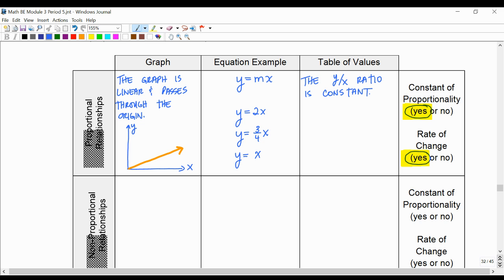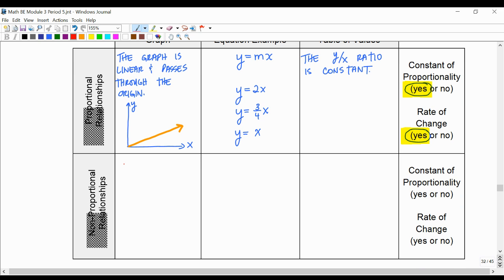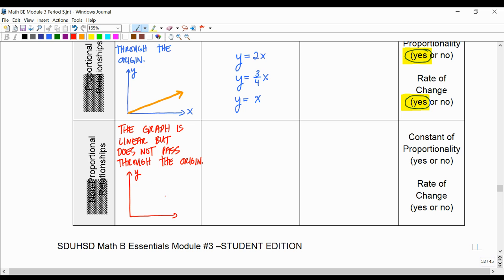And then we're going to talk about non-proportional. So for non-proportional, the graph is linear but does not pass through the origin. So we're talking about non-proportional lines, because technically I suppose it could be non-linear, but we want to focus on lines that aren't proportional.